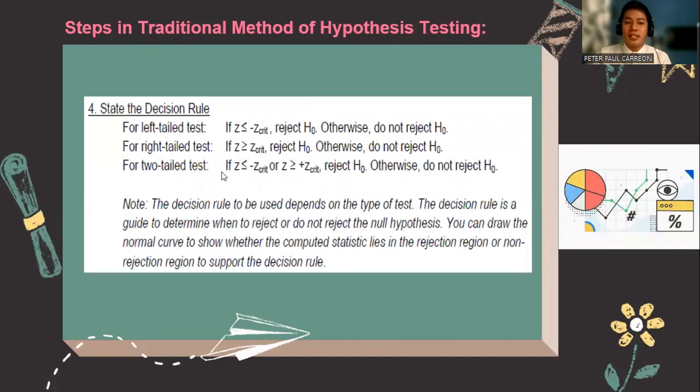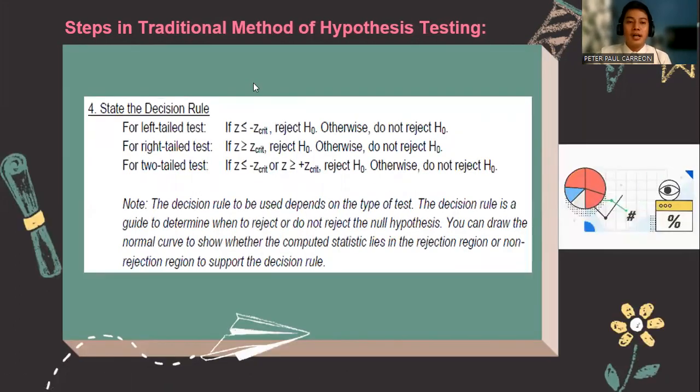And then for the decision rule, for a left-tailed test, if the z-critical value is less than or equal to the negative z-critical, we reject the null hypothesis. For a right-tailed test, if the z-critical value is greater than or equal to the z-critical value, we reject the null hypothesis.